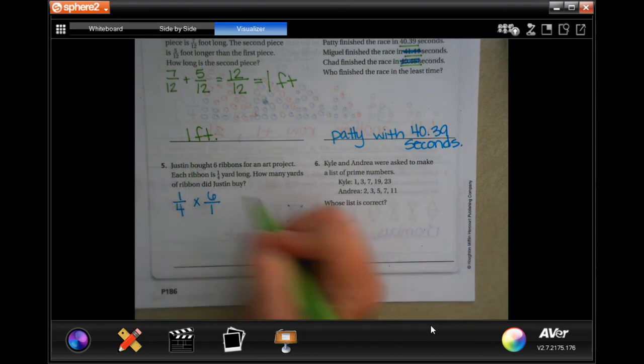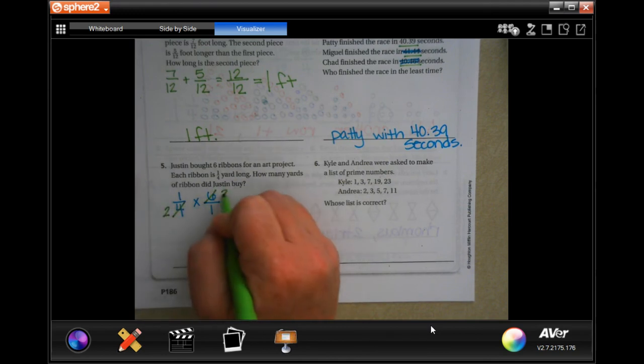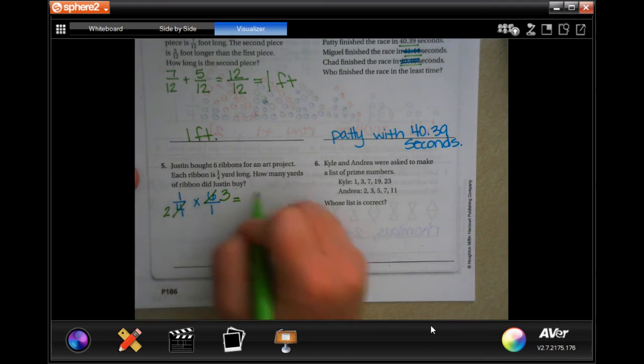And now, I'm gonna go ahead and reduce. So, 2 goes into 4, and 2 goes into 6. So, 2 goes into 4, 2 times. 2 goes into 6, 3 times. So now, I'm gonna go ahead and multiply. So, 1 times 3 is 3, 2 times 1 is 2.